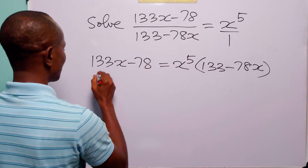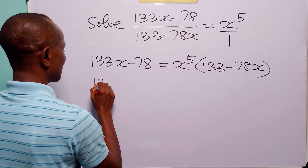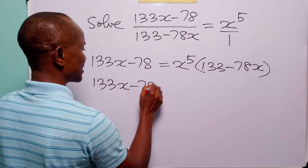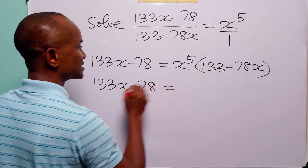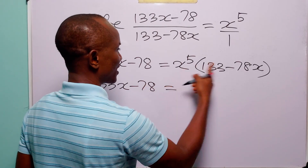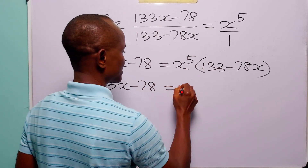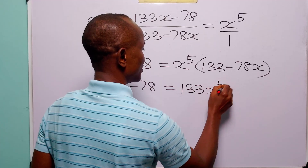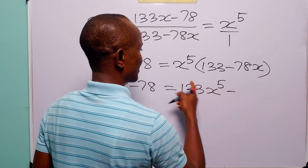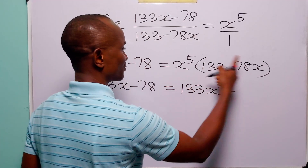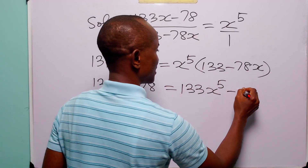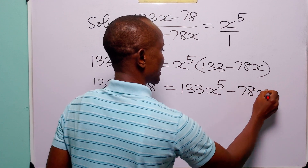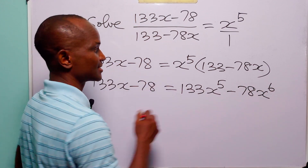From here, we have that 133x minus 78 is equal to x raised to the power 5 times this, which is 133x raised to the power 5 minus x raised to the power 5 times 78x raised to the power 6.